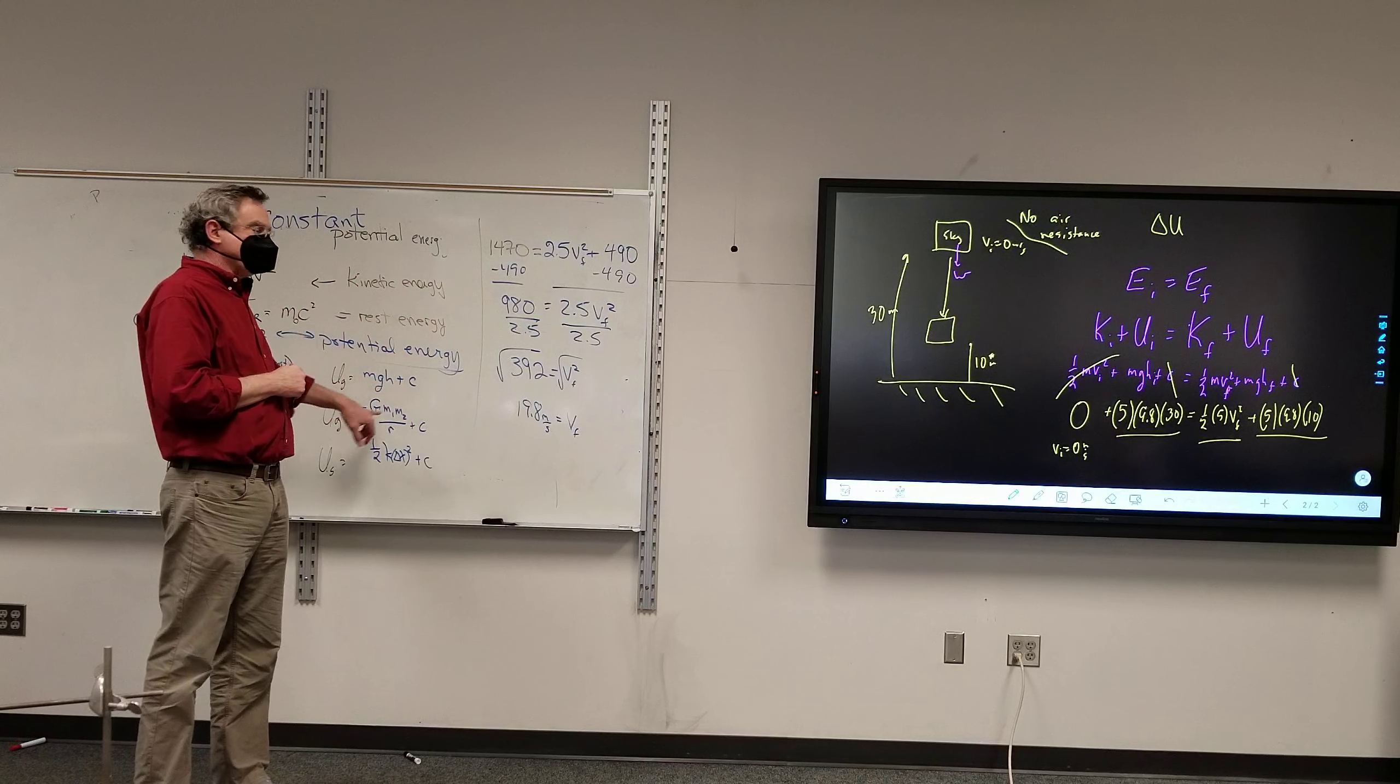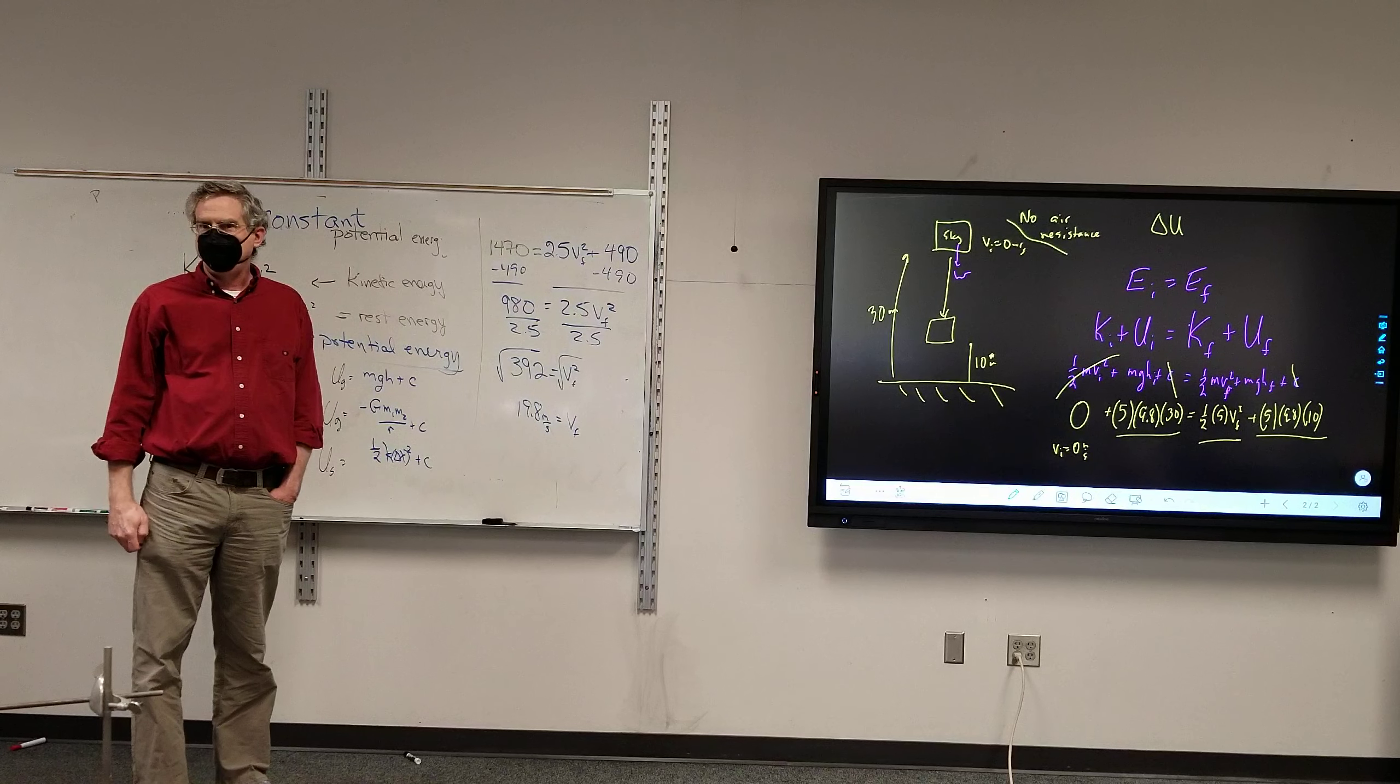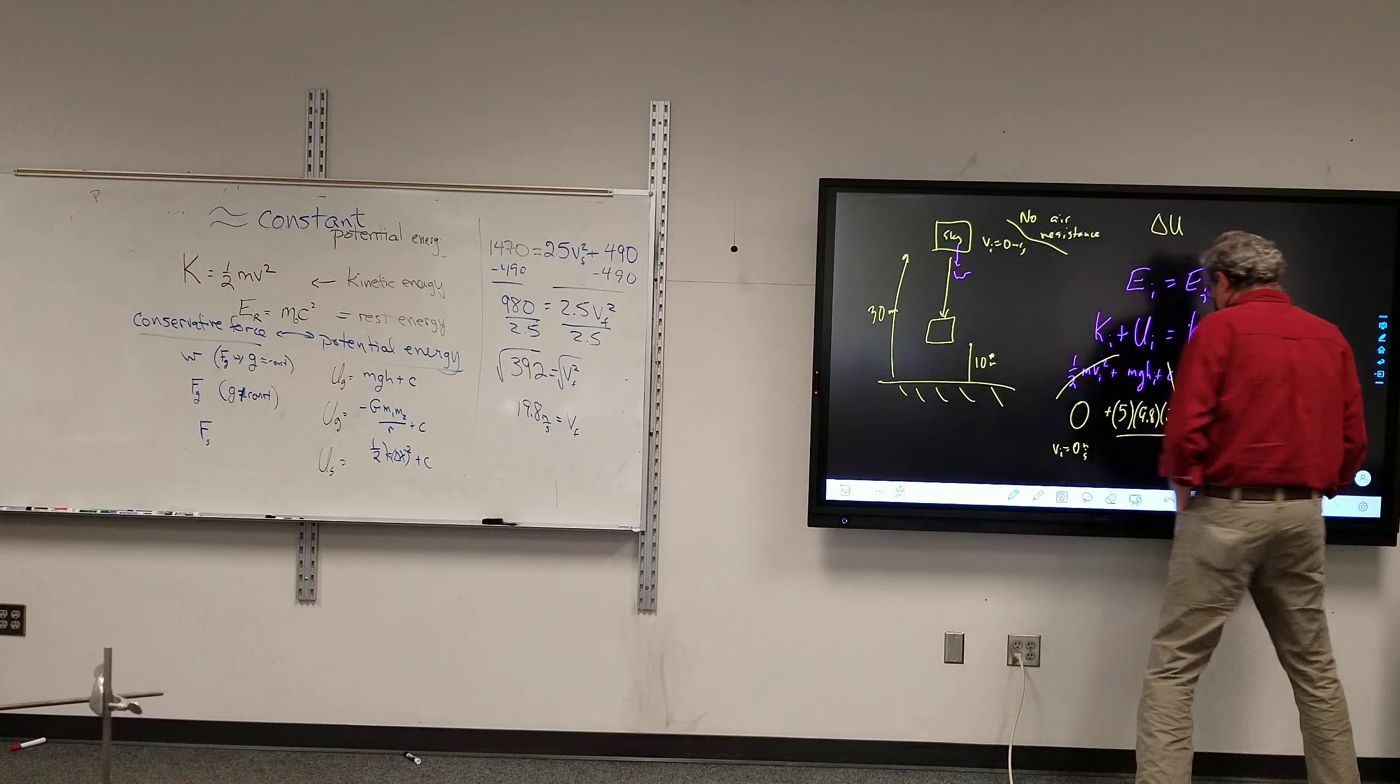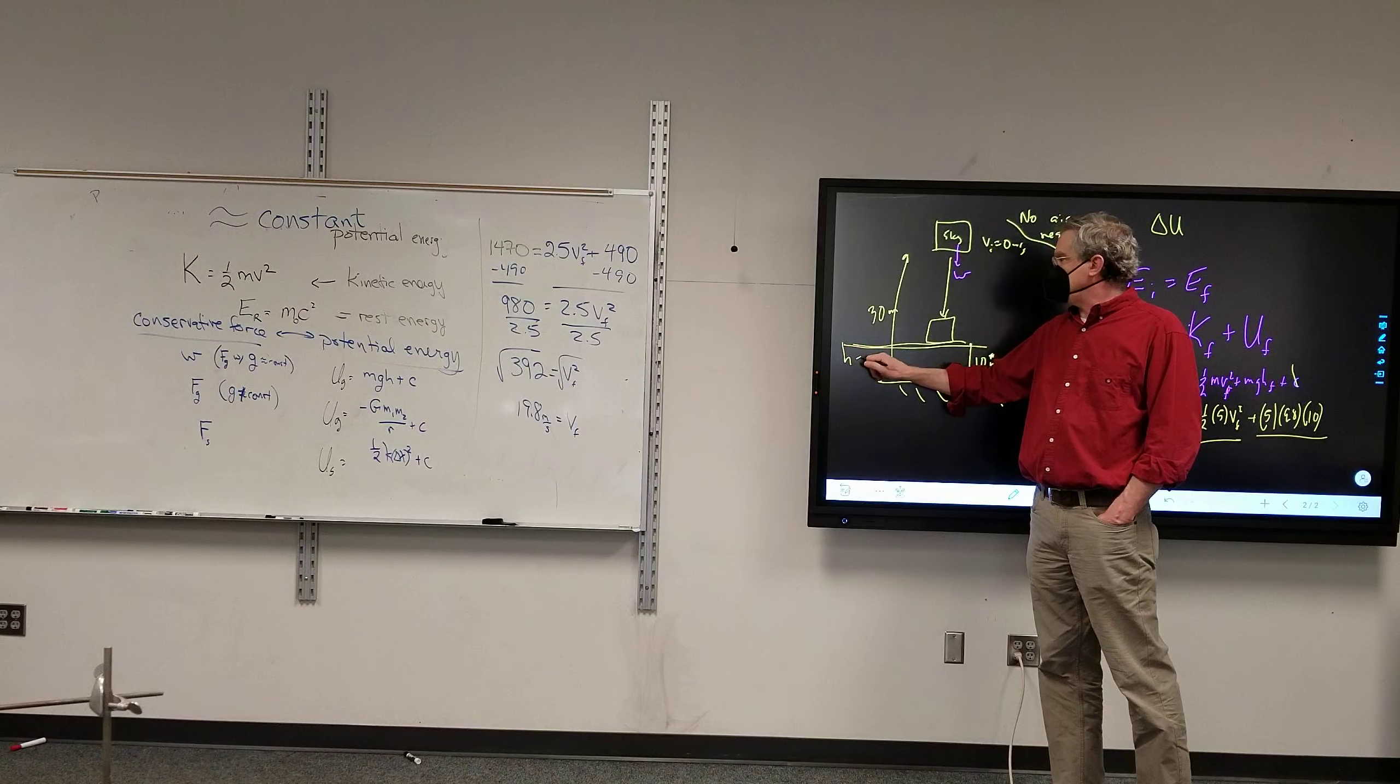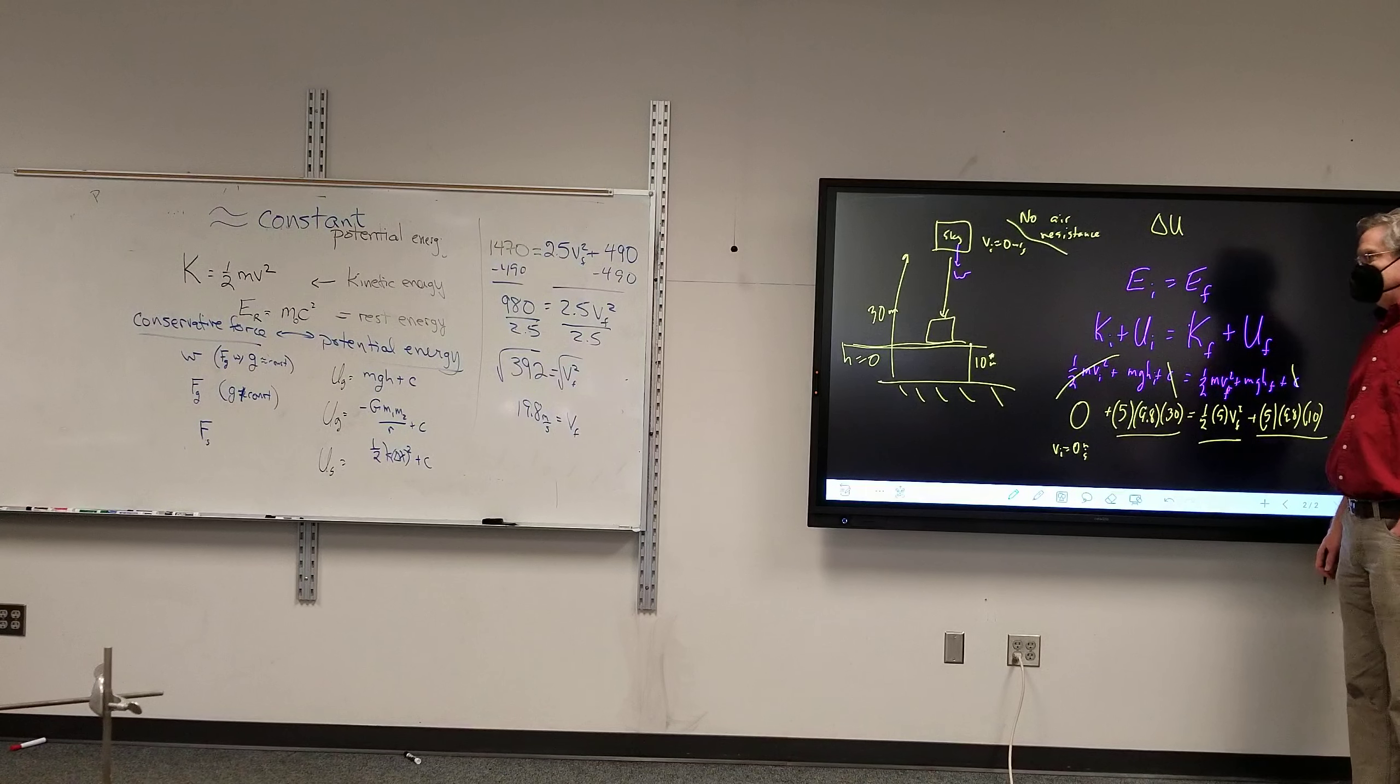This allows us to do the following: I can make my initial height 0 anywhere I want. My recommendation is to make h equals 0 either at the beginning or the end. When you said this was 10, I said if that's 30, that's got to be 10. Because whatever that is, this is 20 less than it. But I would say, why don't we just go ahead and say right at the bottom, let's make that h equals 0. Why? Because I said so.